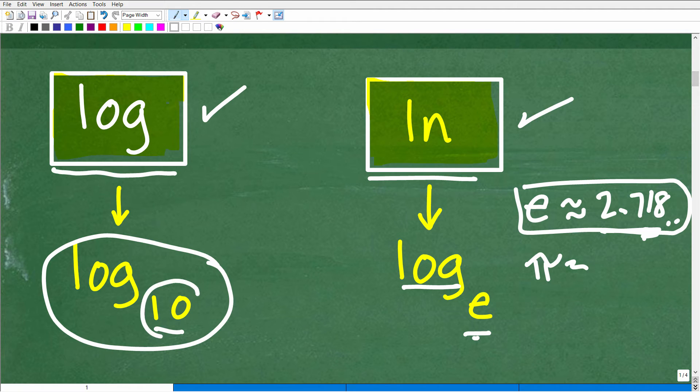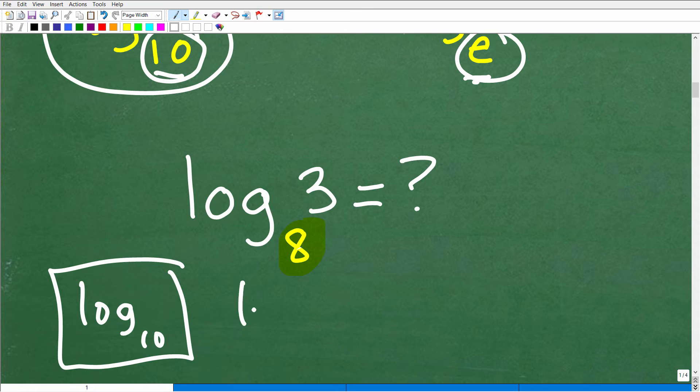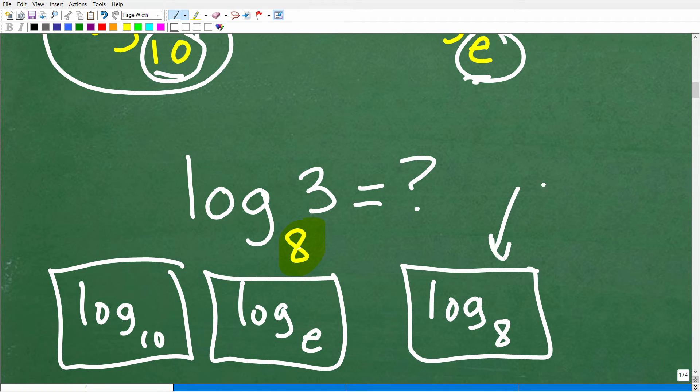So these two buttons are the only buttons that we have on our calculator. But if you notice here, this is log base 10. This is log base E. And I want to find log base 8. So you're saying, well, how are we going to do that? Because all we have is a log base 10 button on our calculator and a log base E button. We don't have a log base 8 button.